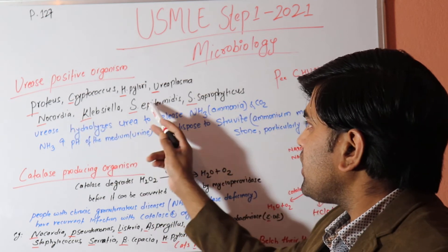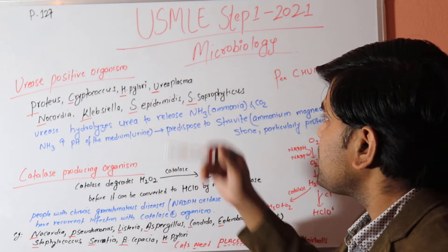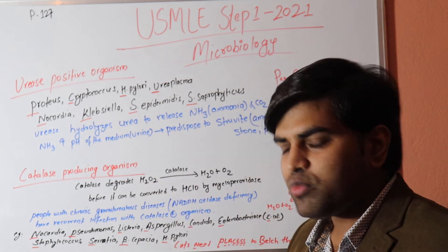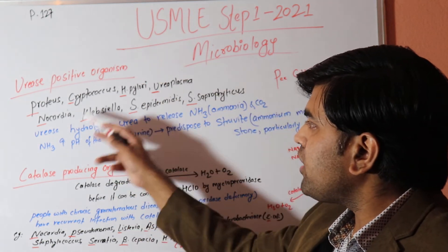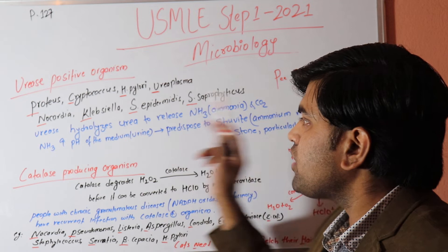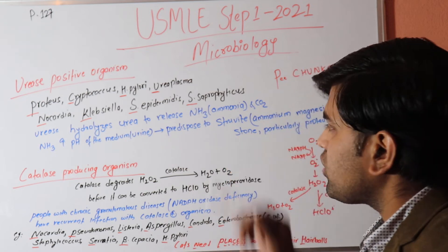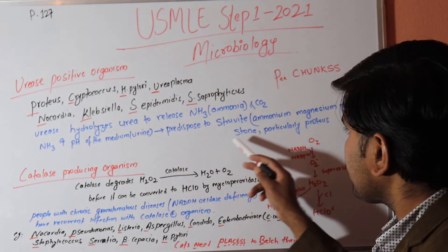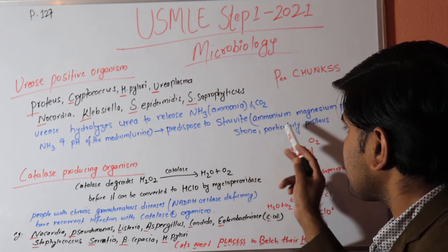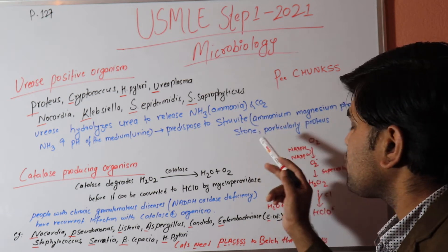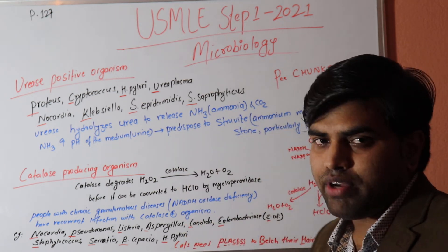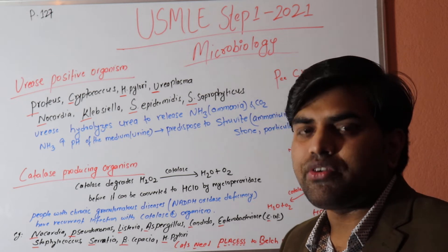Ureaplasma, Nocardia, Staphylococcus epidermidis, and S. saprophyticus are all urease-positive organisms. Proteus and Klebsiella, being gram-negative, are mainly responsible for hospital-acquired infections and predispose patients to struvite — ammonium magnesium phosphate — stones, particularly in urinary tract infections.